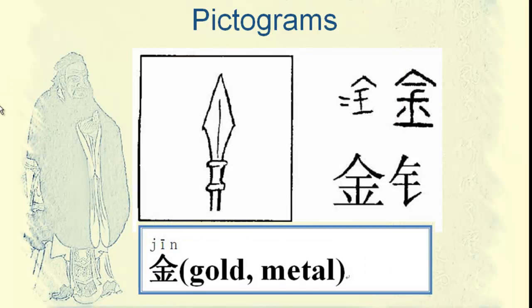This one is a little complicated, but maybe easy to understand. The character means gold or metal. The pronunciation is 金 (Jīn). In the picture, there is an arrow made of metal, so this character actually derives from the arrow. 金 means gold or metal.